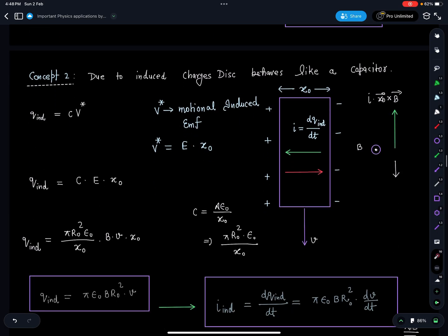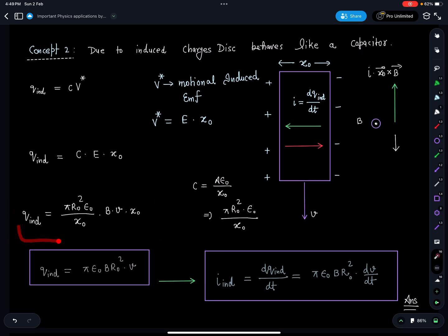However, the standard formula is E = BvL. Concept 2 is that due to these induced charges, the disc is behaving like a capacitor. So q_induced = C·E_induced where E_induced = BvL, or E_induced = electric field times the width of the disc. Charge on the capacitor or induced charges developing here is C·E·x₀ where C is the capacitance. It is like a parallel plate capacitor so C = (ε₀·πr₀²)/x₀.